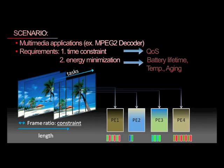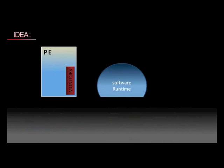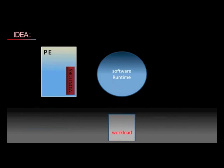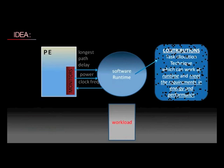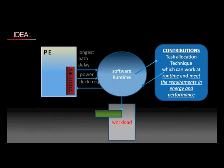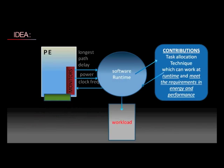Tasks can be allocated in an efficient way, which can be found by exploiting circuit monitors that give information on per-core power and speed. We propose a technique which minimizes the energy consumption while meeting the time constraint. This technique can be applied at runtime.